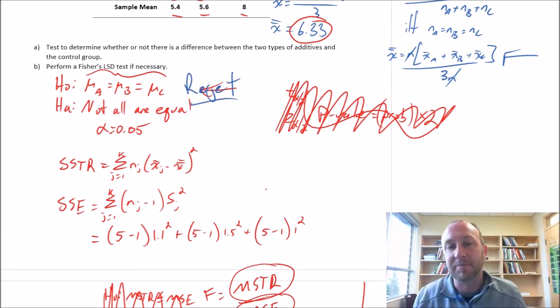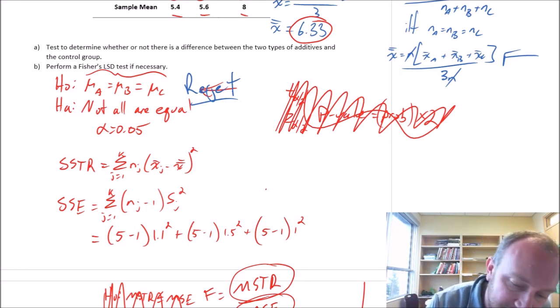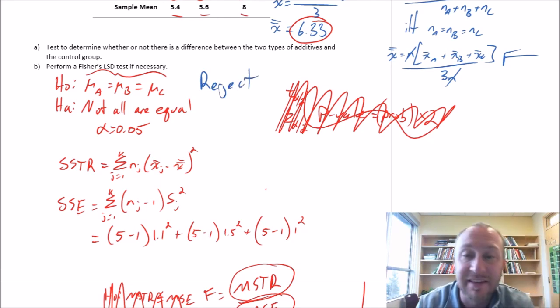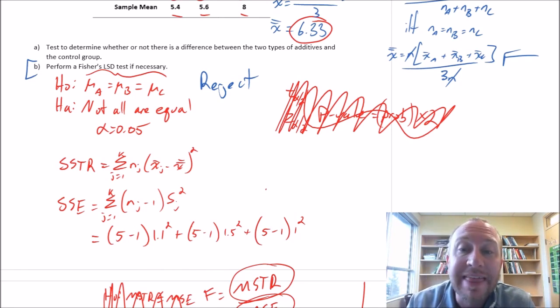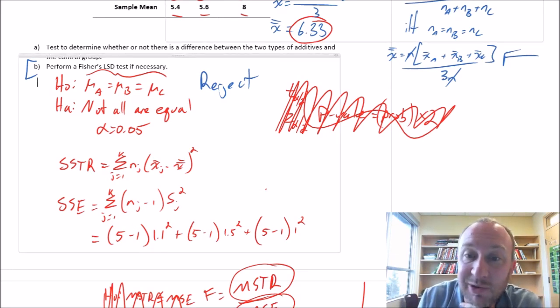Which of course brings us to another point: if we reject this null and we say not all of them are equal or at least one of them is different, well that brings up the next question - which one is different? This is where we will perform Fisher's LSD. I'm already almost 20 minutes into this video, so I think I'll end it here. We've done enough for one video, and I'll start up right where we've left off here to perform this Fisher's least significant difference. I'll end it here and we'll see you again soon.